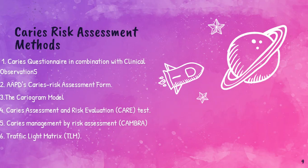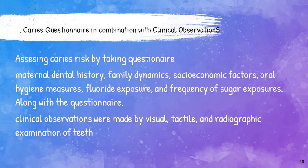To assess the caries risk, many tools or methods have been implemented. They are: questionnaire, the American Caries Risk Assessment form devised by the American Academy of Pediatric Dentistry, the Cariogram Model, the Caries Assessment and Risk Evaluation test, Caries Management by Risk Assessment, and the Traffic Light system.